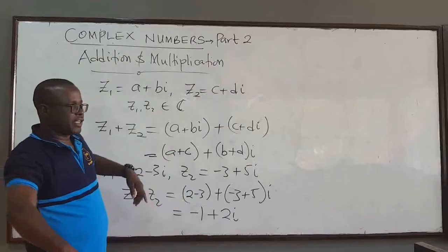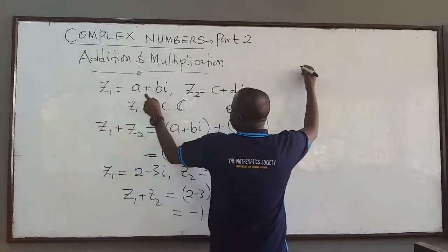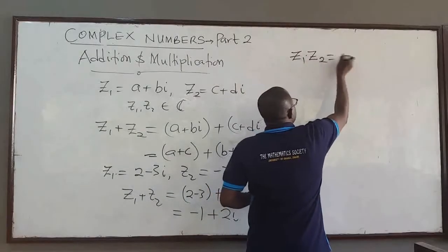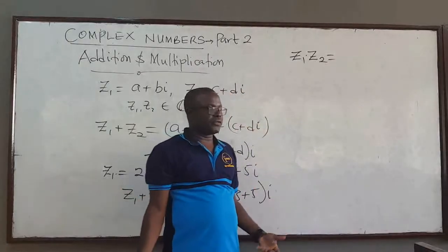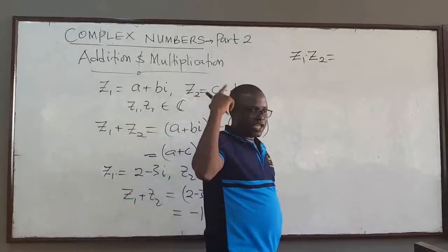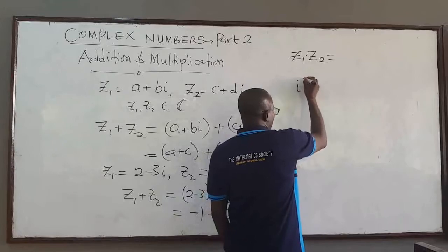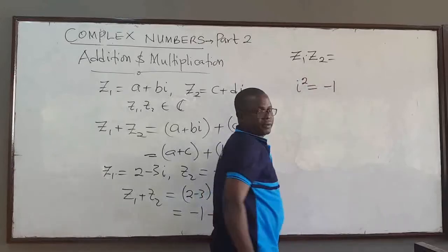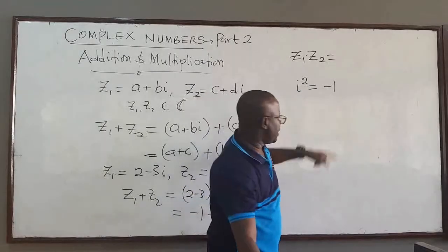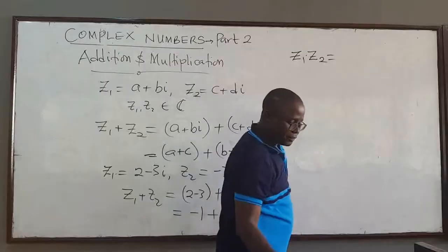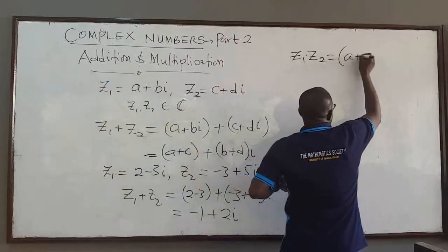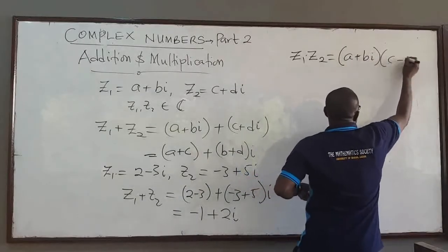How do you multiply complex numbers? So let's take the same two complex numbers — how do I multiply Z1 times Z2? You do it as you would for polynomial multiplication, or binomial multiplication. But you have to keep in mind that i squared is equal to negative 1. So whenever you see i squared, replace it with negative 1 — that's what you should bear in mind. If I want to multiply these two complex numbers, this is basically equal to A plus Bi multiplied by C plus Di.